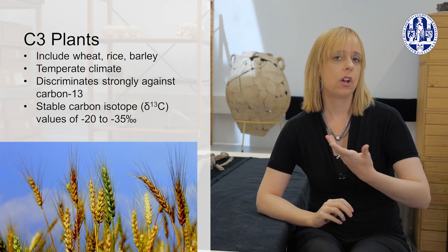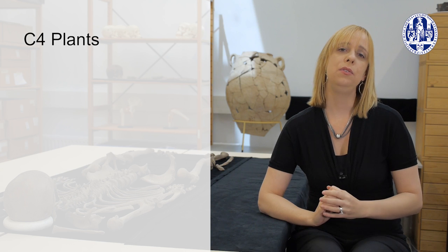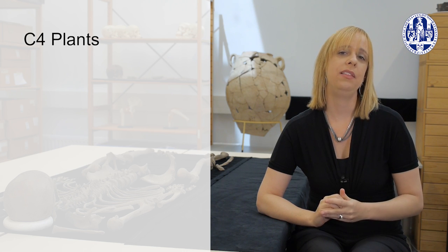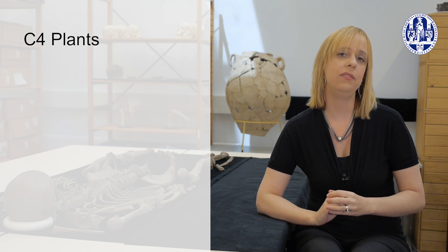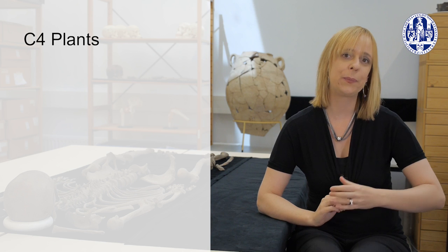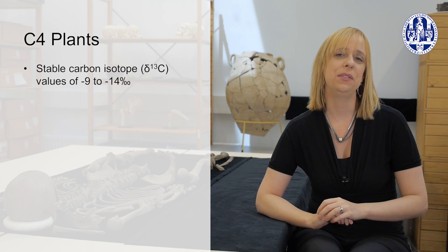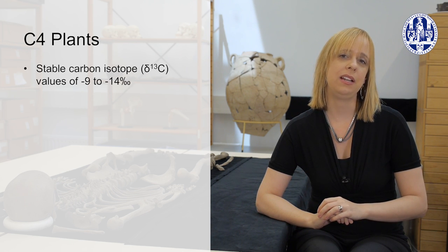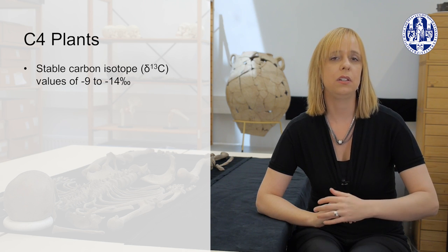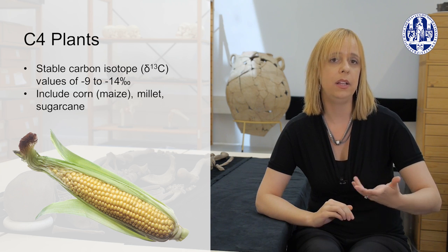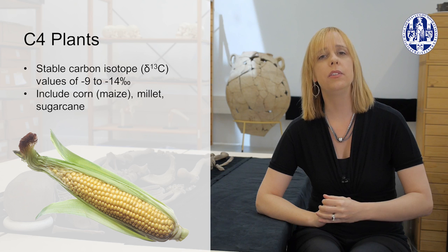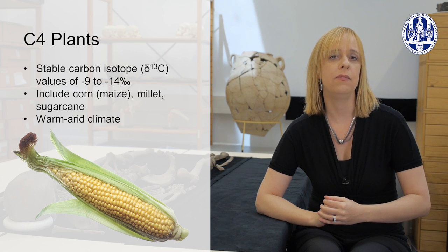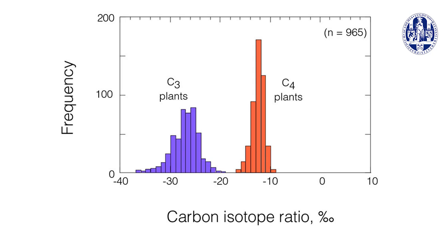Then there's another group of plants called C4 plants because they use a different photosynthetic pathway that doesn't discriminate as heavily against the heavier isotope. This results in ratios of carbon-12 to carbon-13 of minus 9 to minus 14 per mil. C4 plants include corn or maize, millet, and sugar cane, as well as other plants adapted to hot and arid environments. The ranges of these C3 and C4 plants do not overlap.